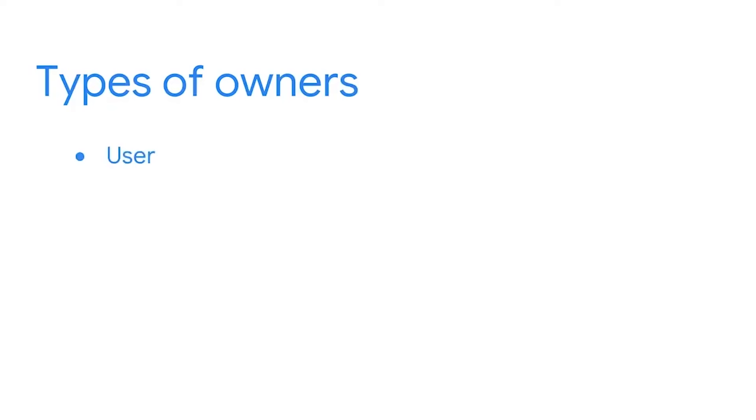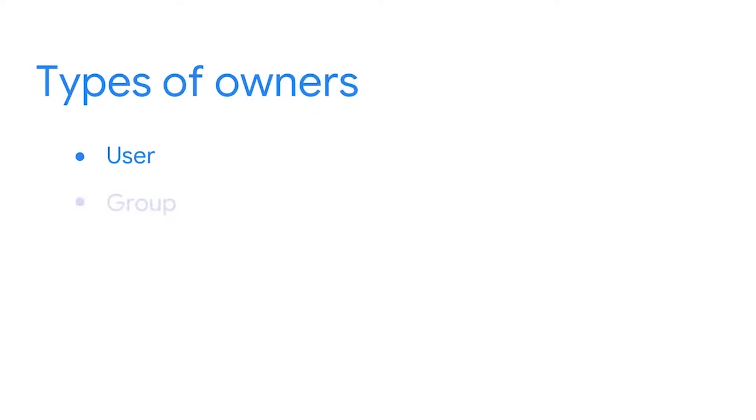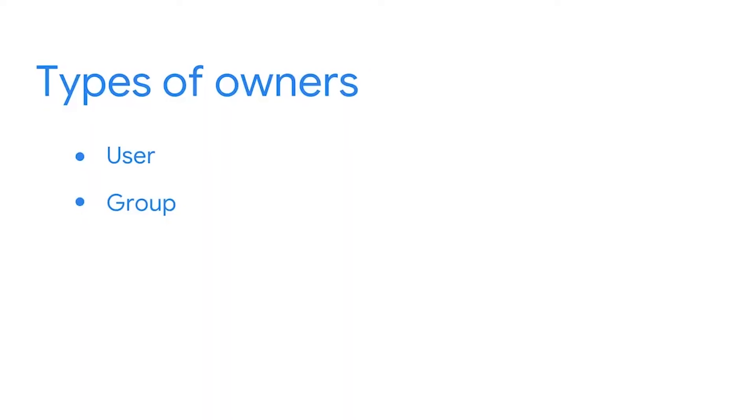Permissions are granted for three different types of owners. The first type is the user. The user is the owner of the file. When you create a file, you become the owner of the file, but the ownership can be changed. Group is the next type. Every user is a part of a certain group. A group consists of several users, and this is one way to manage a multi-user environment. Finally, there is other. Other can be considered all other users on the system — basically anyone else with access to the system belongs to this group.